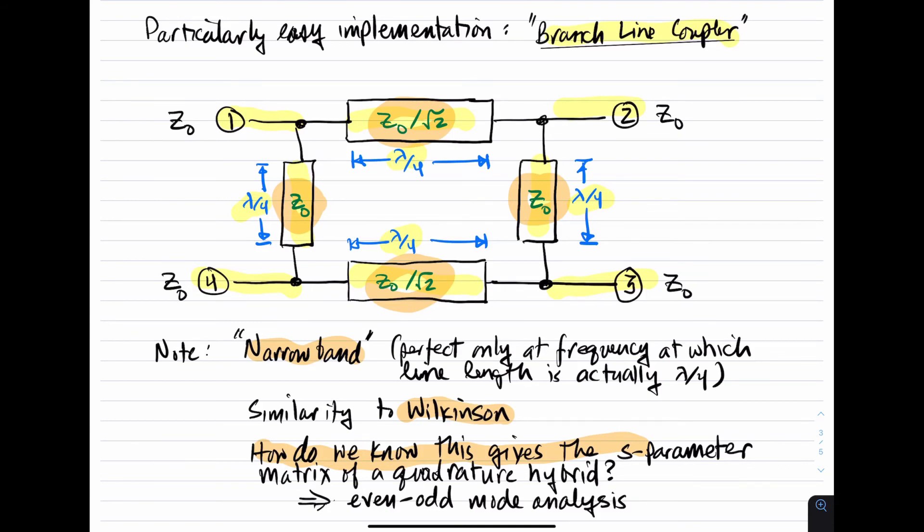Well, if you want to confirm that this works like a quadrature hybrid, the way to do it is using a technique known as even-odd mode analysis. It's not very hard to do, it's a little bit tedious. But it's a useful thing to do if you specifically are curious about why this turns out to have the S-parameters of a quadrature hybrid.